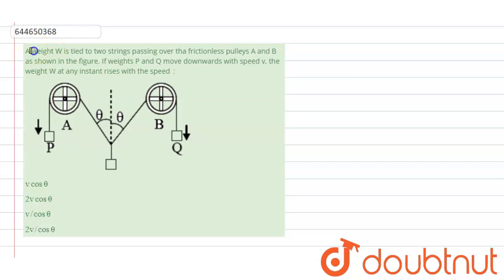Hello students, so the question is: a weight W is tied to two strings passing over the frictionless pulleys capital A and capital B as shown in the figure.